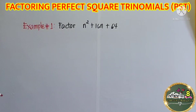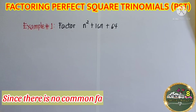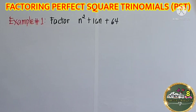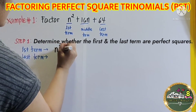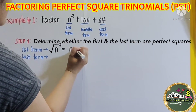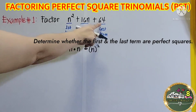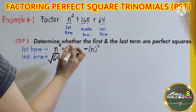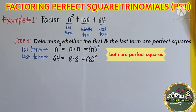Example number 1: factor n squared plus 16n plus 64. Study first the given trinomial. If there is a common factor, you need to factor it first using greatest common monomial factor. Since there is no common factor, you may proceed with step 1. The first term is n squared — the square root of n squared is n, and n times n equals n squared. The last term is 64 — the square root of 64 is 8, and 8 multiplied by itself gives 8 squared. Both are perfect squares.